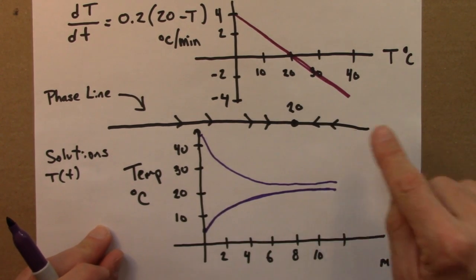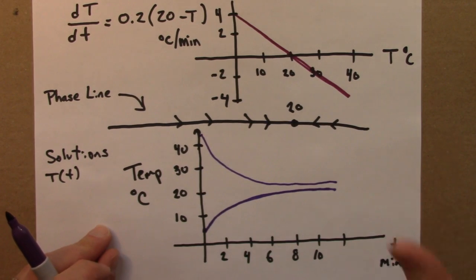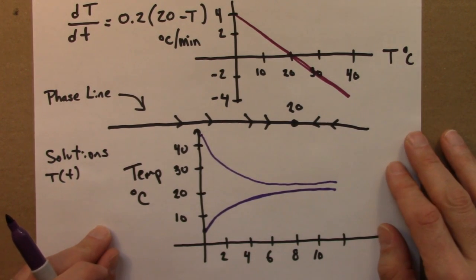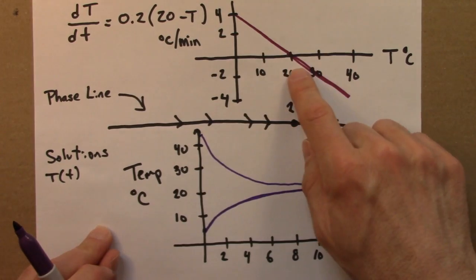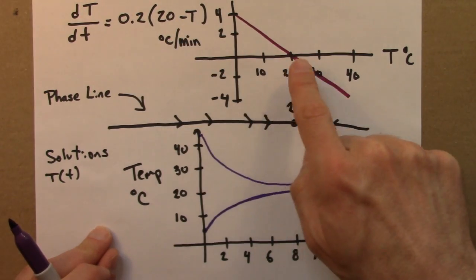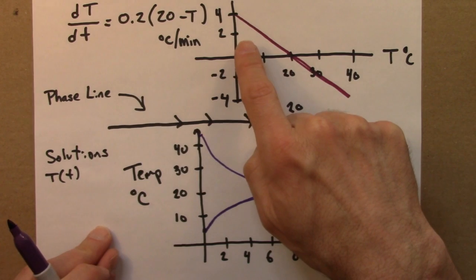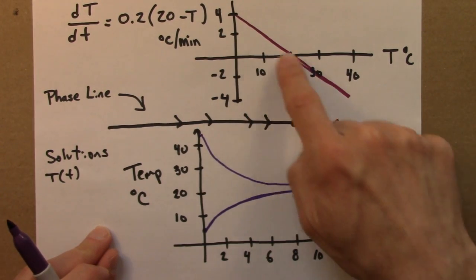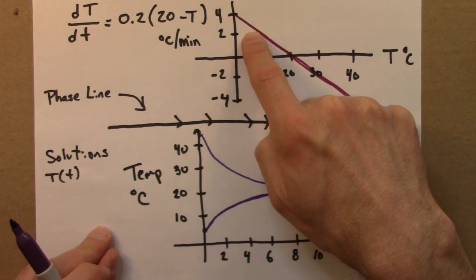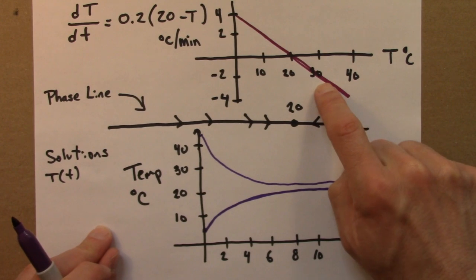But we can get an awful lot of information. So this is called a qualitative analysis of a differential equation. We sketch the right-hand side, and we see where is the function increasing and where is it decreasing. It's increasing whenever the derivative is positive, it's decreasing whenever the derivative is negative.